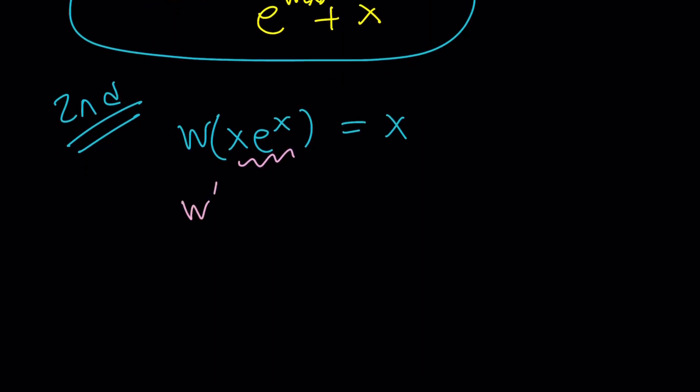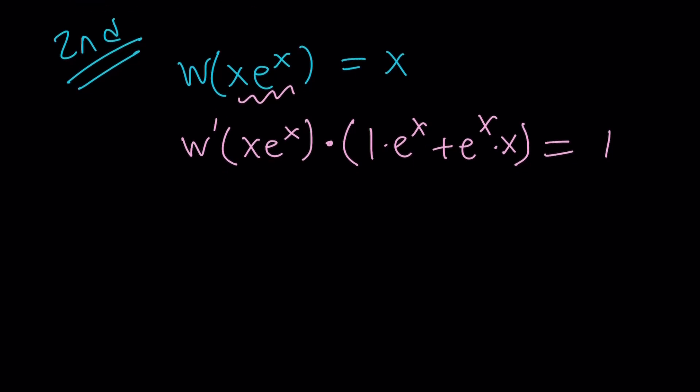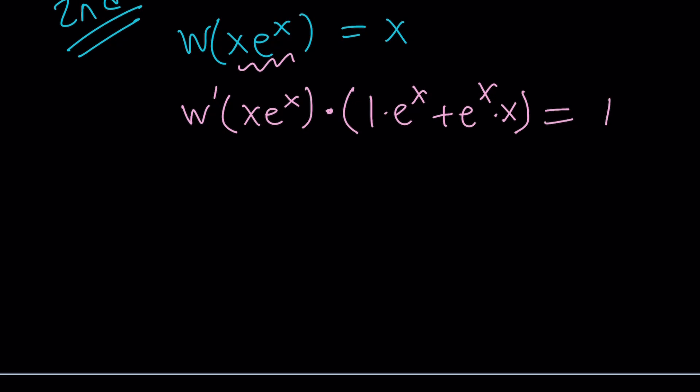That's going to be by the chain rule, W prime x e to the x, times the derivative of the inside, which is the derivative of x e to the x, which is by product rule, the derivative of x times e to the x, plus the derivative of e to the x times x. You get the idea, hopefully. And of course, this is equal to 1 again. So now, I know this kind of looks like the first method, but notice we started with a different identity this time. And we're going to do something else.